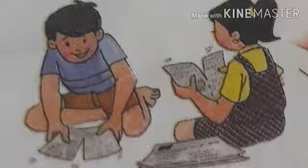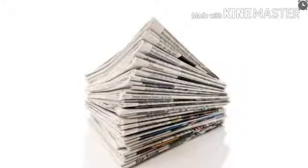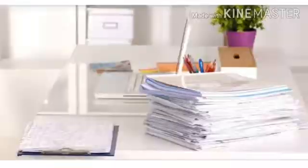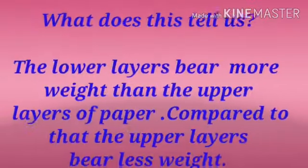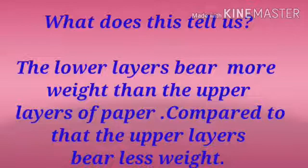Moving to activity 2. Here, some papers are arranged one above the other. Can you see the difference between the upper layer and lower layers? The lower papers are pressed and more pressure is there, but on the upper layers less weight is there. What does this tell us? The lower layers bear more weight than the upper layers of paper. Compared to that, the upper layers bear less weight.